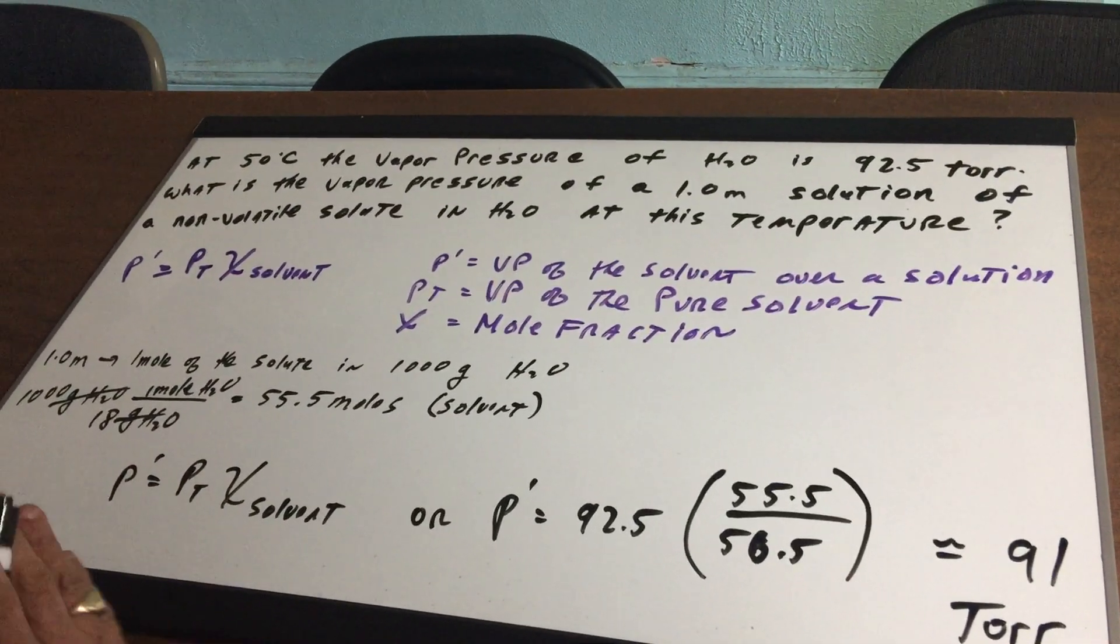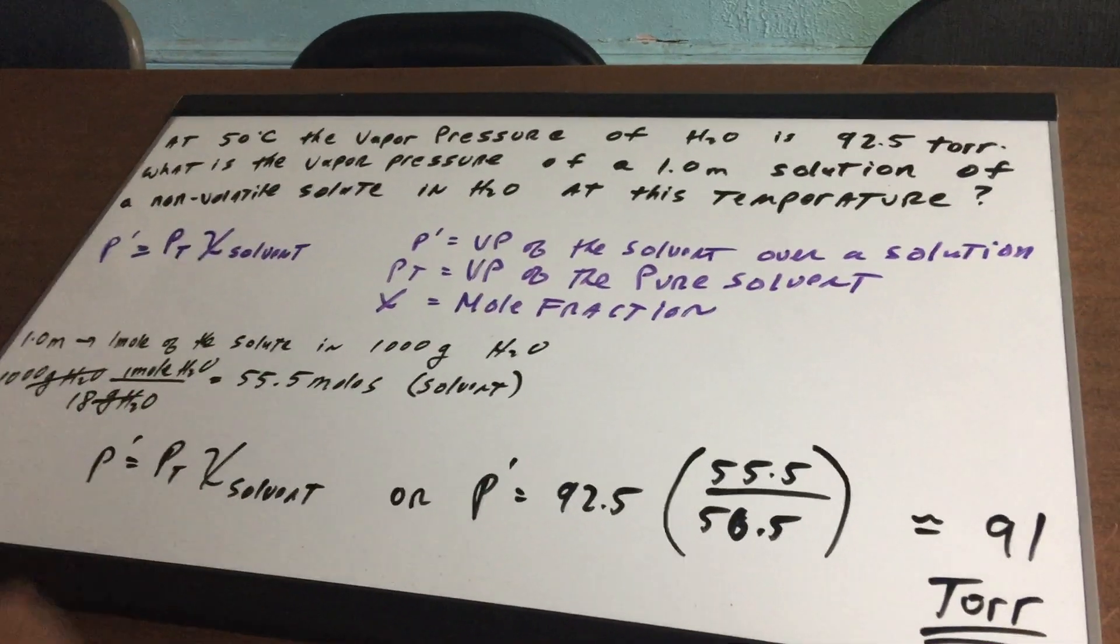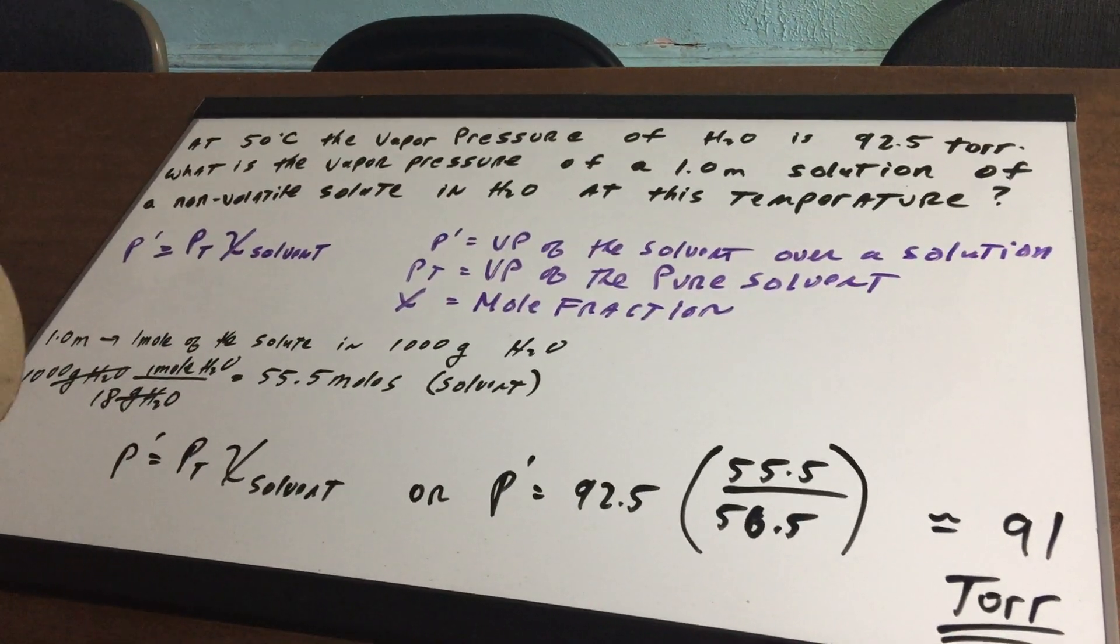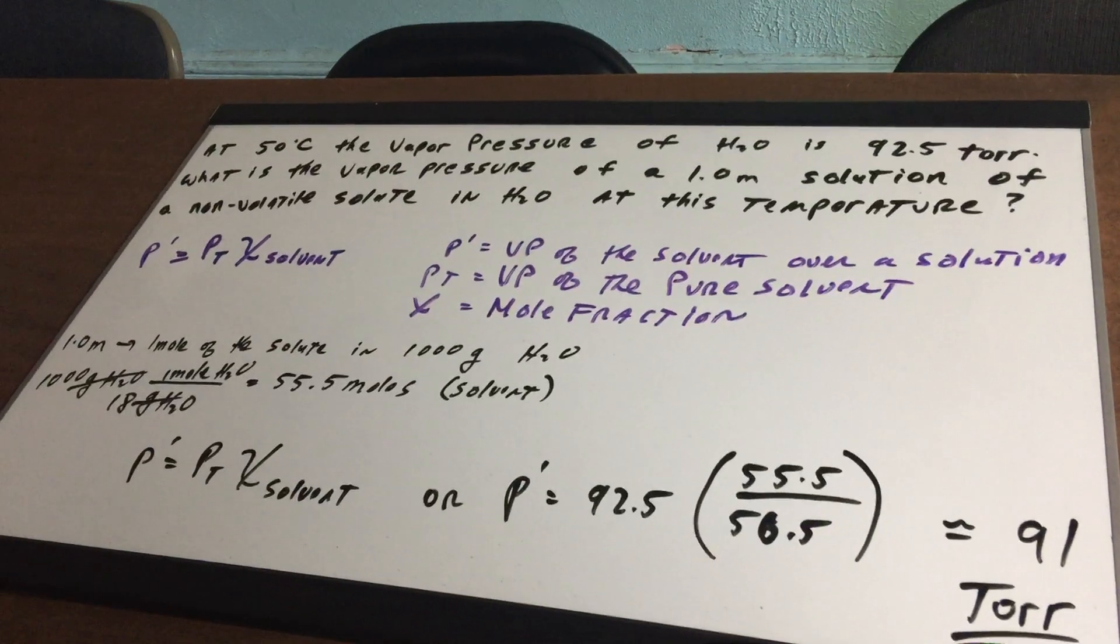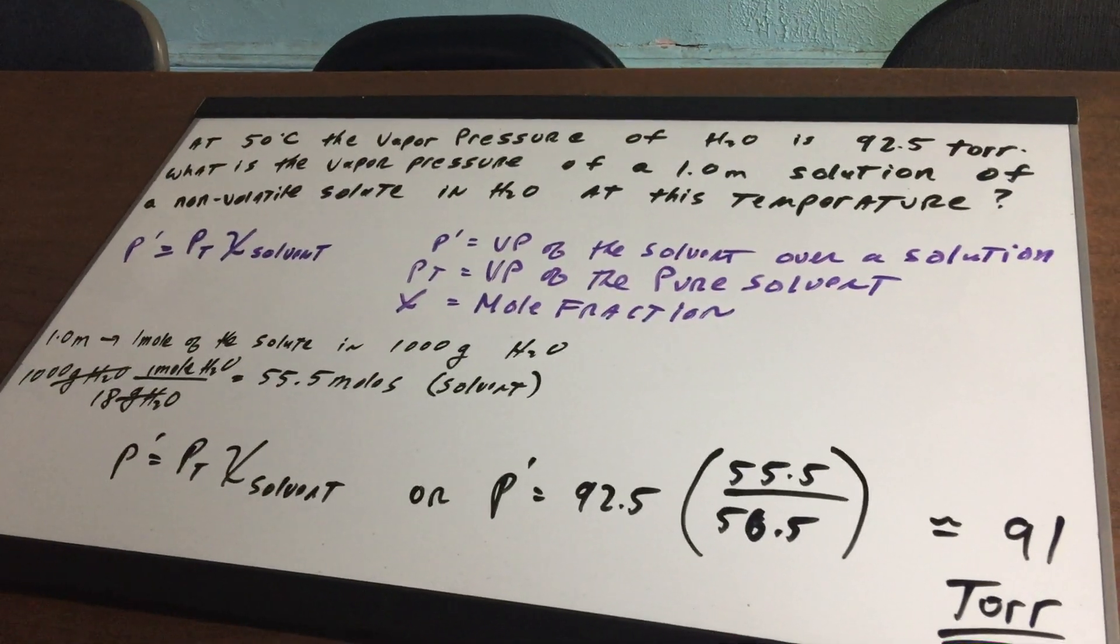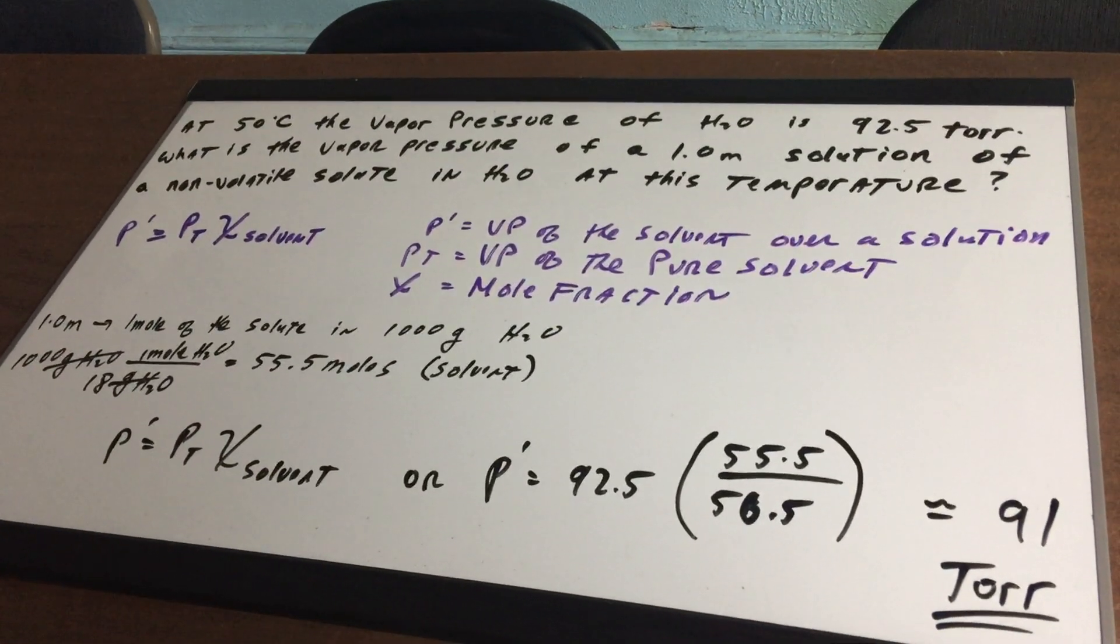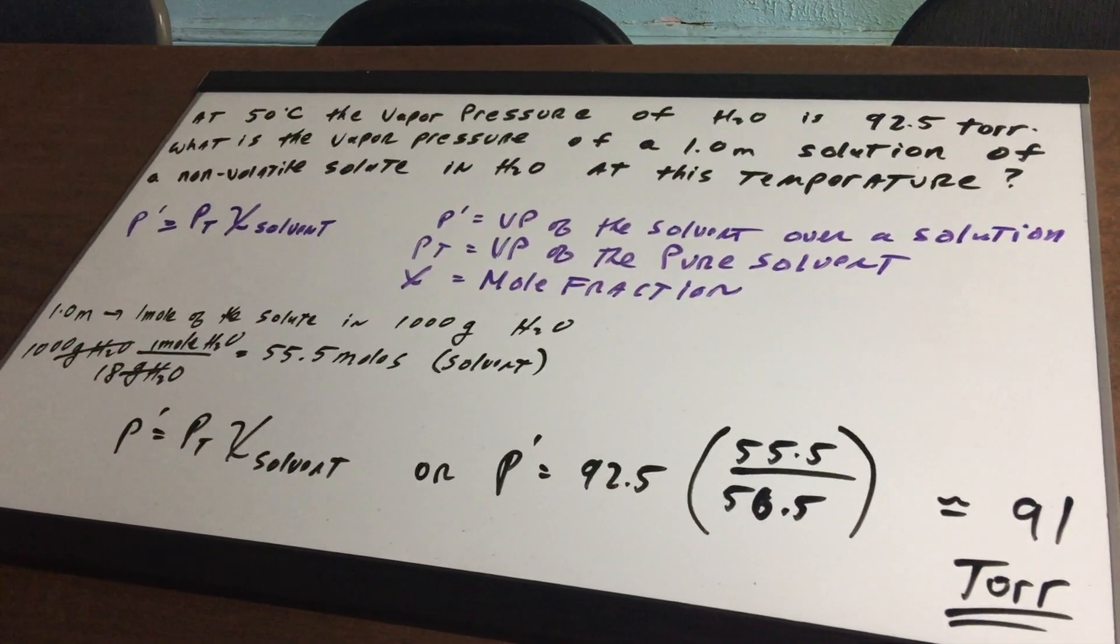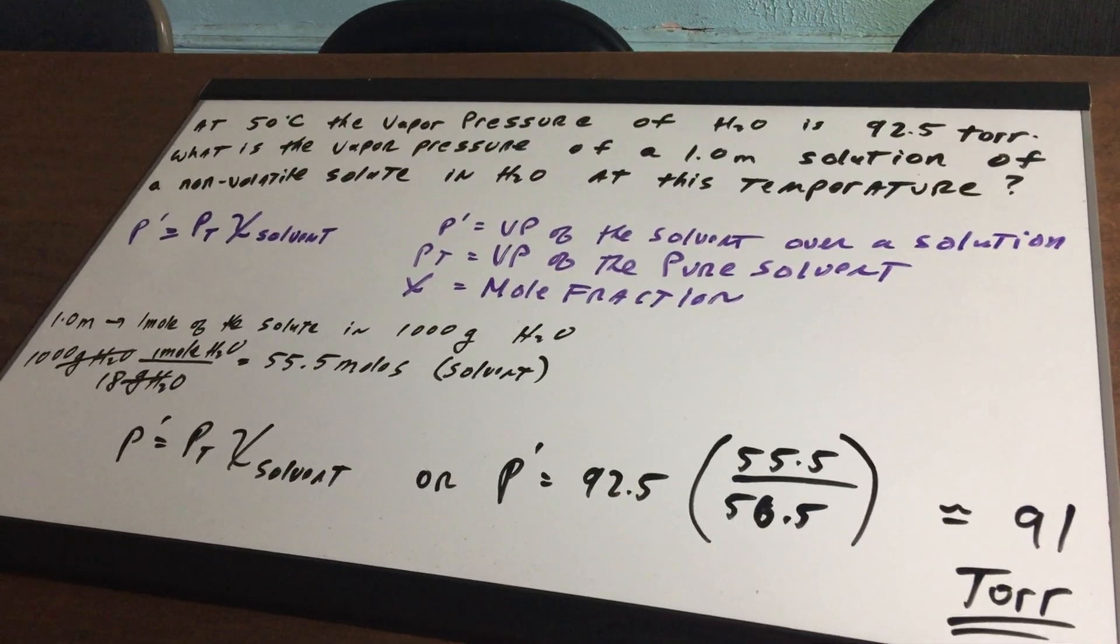a good bet for the DAT is for you to understand that if the boiling point of something is high, the vapor pressure is low. Never forget that. Alright, back to our problem. 50 degrees, we have the vapor pressure of water is 92.5 torr.